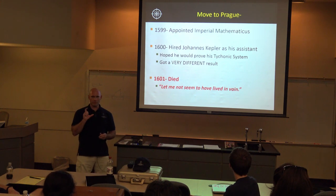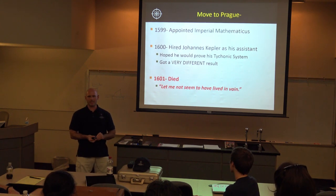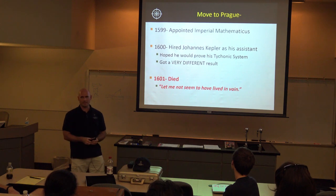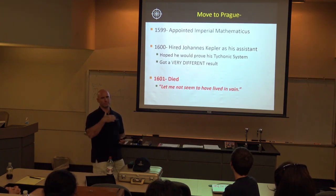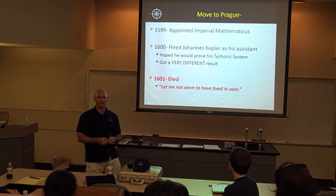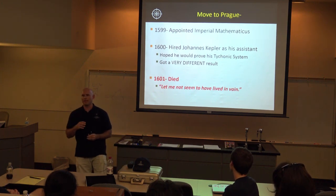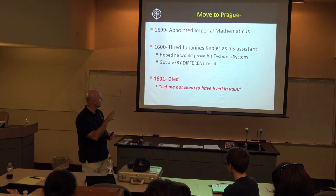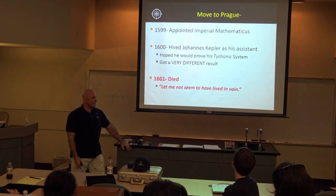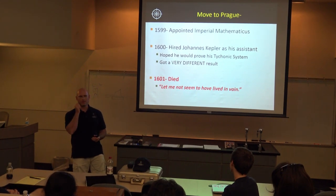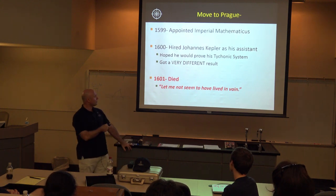A couple of years later Tycho moved to Prague in modern-day Czech lands. Two significant things happened: in 1599 he was appointed Imperial Mathematicus, and in 1600 he hired a young German scientist and brilliant theoretical mathematician named Johannes Kepler as his protégé, putting Kepler in charge of the Mars data. Tycho hoped that Kepler's work would ultimately prove the validity of his Tychonic system, but it took him down a very different path.